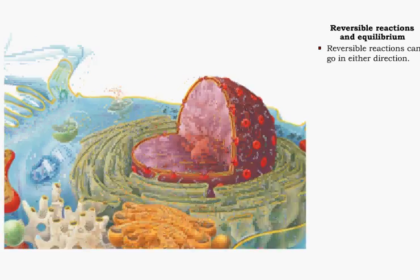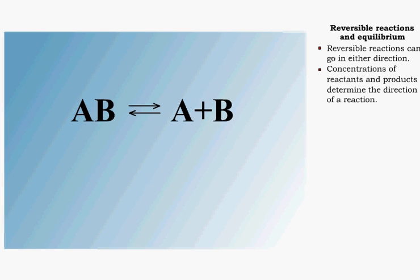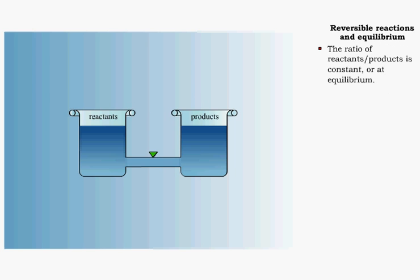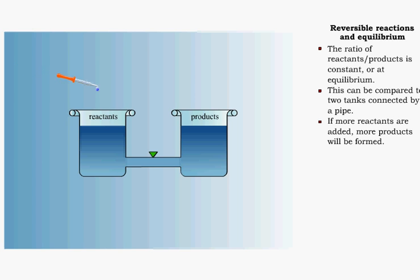Many reactions are reversible, which means that they can go in either direction. One major factor that determines the direction of the reaction is the concentration of the reactants and products. For any particular reversible reaction, the ratio of reactants and products will remain constant. The reactants and products will be at an equilibrium. If there is an increase in the concentration of the reactants, some of them will react to become the products.